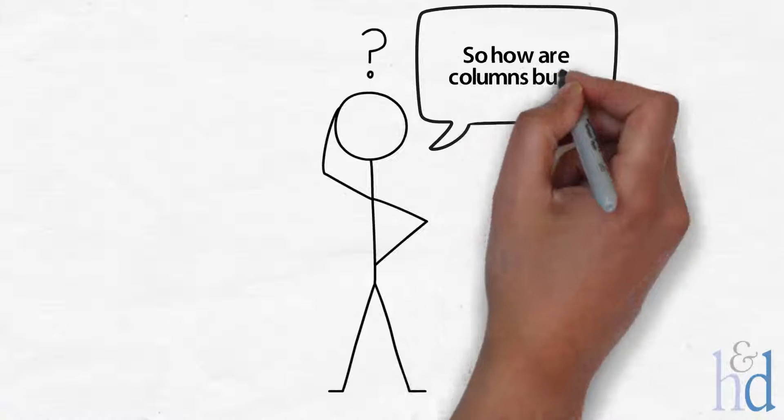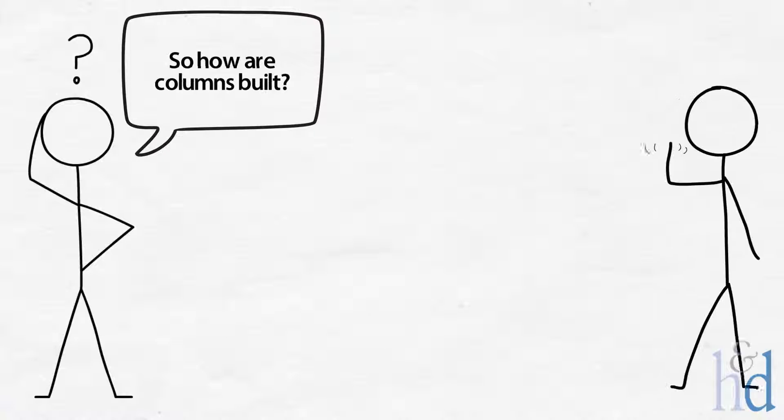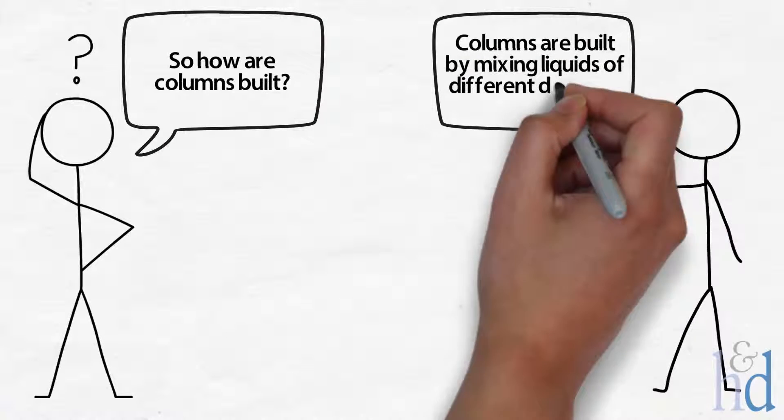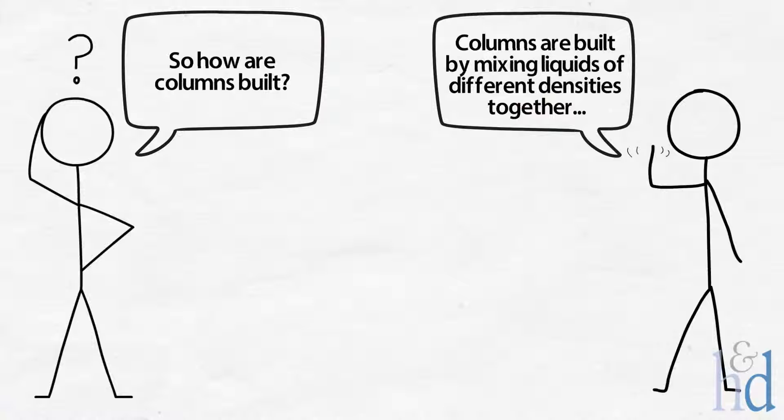So, how are columns built? Columns are built by mixing liquids of different densities together to create a smooth density gradient from top to bottom. A sample is then dropped into the column and the point where it comes to rest gives its density.